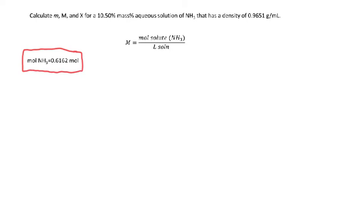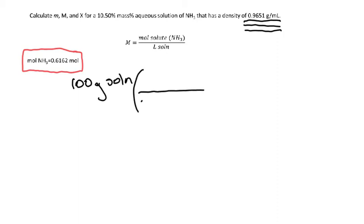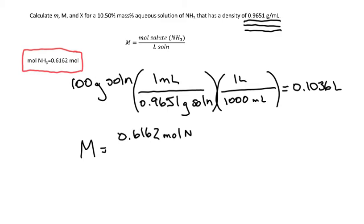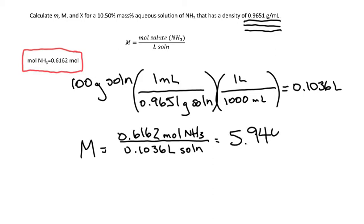We know we have 100 grams of the solution — the total water plus ammonia — and we know its density. Density is the relationship between weight and volume. For every 0.9651 grams of solution there is one milliliter, and there are 1000 milliliters in one liter, giving us 0.1036 liters of solution. Dividing 0.6162 moles by 0.1036 liters gives a molarity of 5.948 molar.